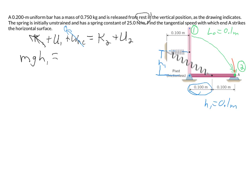For the final kinetic energy, we think of this as a thin rod rotating about its end, so we use rotational kinetic energy: ½Iω₂². For a slender rod with the axis at the end, the moment of inertia is I = ⅓ML² — not ¹⁄₁₂ML², which applies when the axis is at the center. The ⅓ML² result can be derived using the parallel axis theorem.